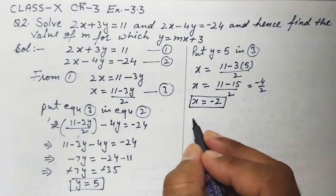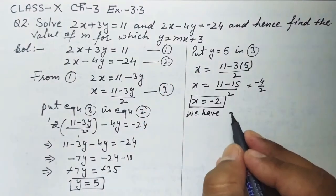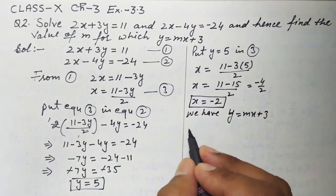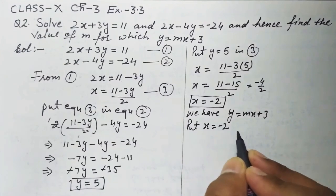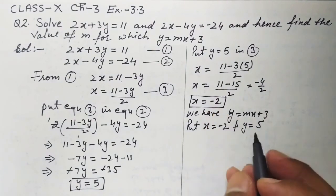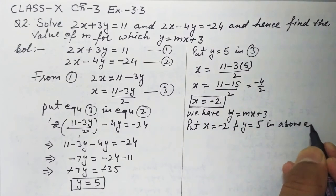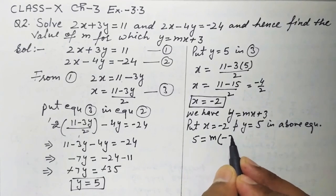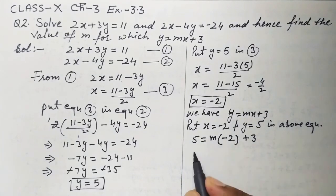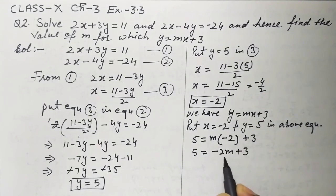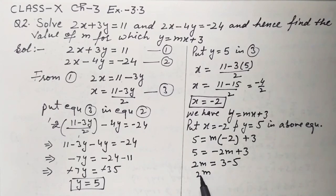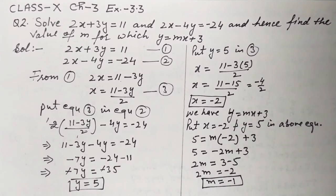Now we have the equation y is equal to mx plus 3. We fill in x is equal to minus 2 and y is equal to 5. So 5 is equal to m times minus 2, plus 3, which gives 5 is equal to minus 2m plus 3. Taking 2m to the left side: 2m is equal to 3 minus 5, which is minus 2. So m is equal to minus 2 over 2, that is minus 1.